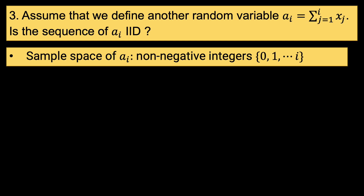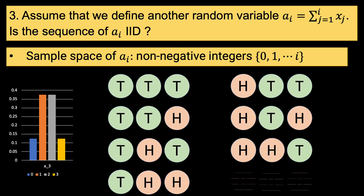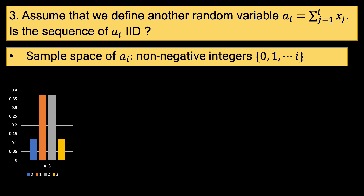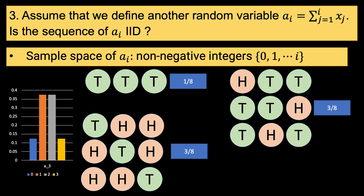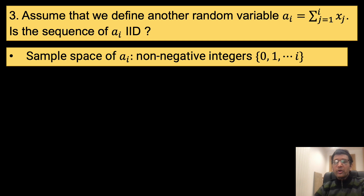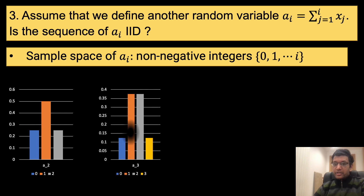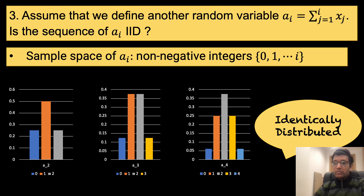Let us consider the case of a sub 3, or three coin tosses. This has a different sample space and the probability of obtaining 0, 1, 2, and 3 heads is 0.125, 0.375, 0.375, and 0.125 respectively. This is because we have eight possible outcomes. We can rearrange the possible outcomes to realize that one outcome had no heads, three had one head, three had two heads, and one had three heads. What we observe is that the sample spaces for a sub 2, a sub 3, and a sub 4 are different, and hence the probability distributions are also different. Thus, it is pretty clear that the sequence of a sub i cannot be identically distributed.